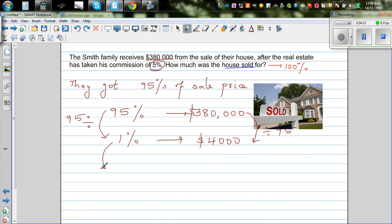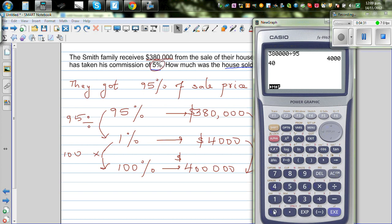Now you want to find the 100%. From 1% you can always find any percent. From 1% you want to find 100%, so that is times by 100. So if you times this by 100, you do the same thing to this. Times this by 100. So this is 400,000. 4,000 times 100, which is 400,000.